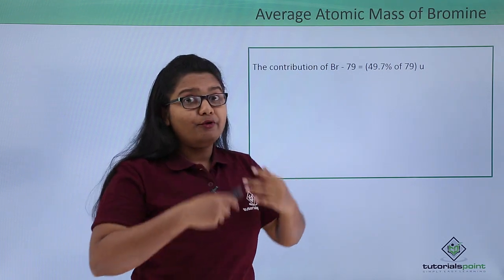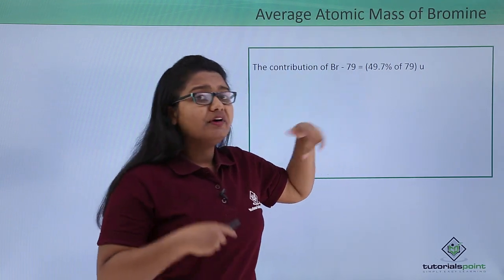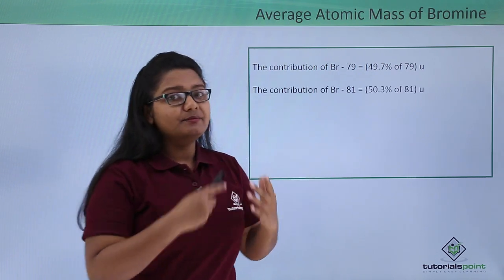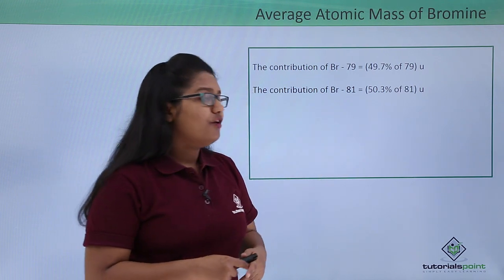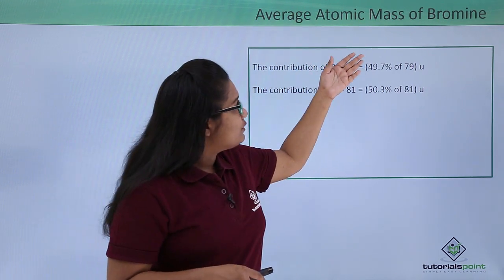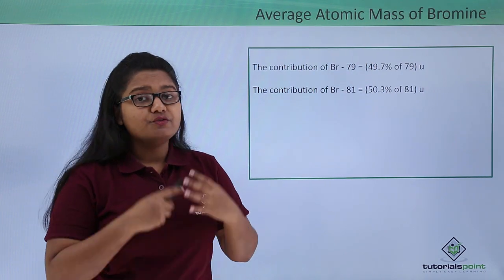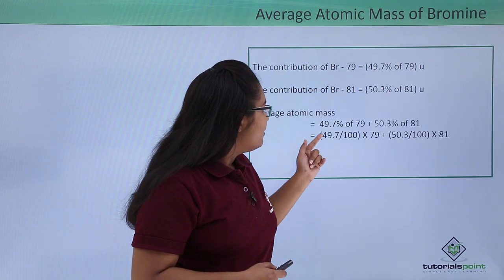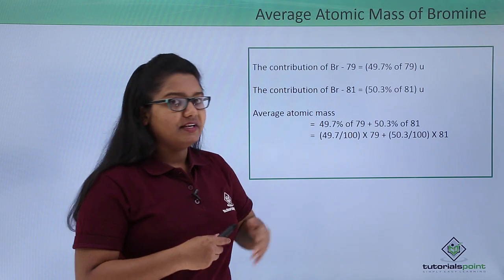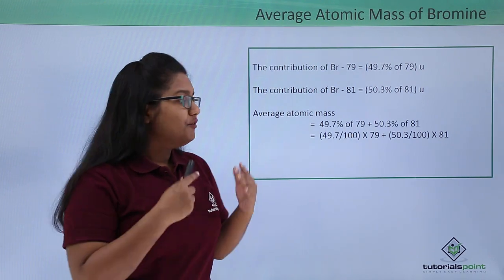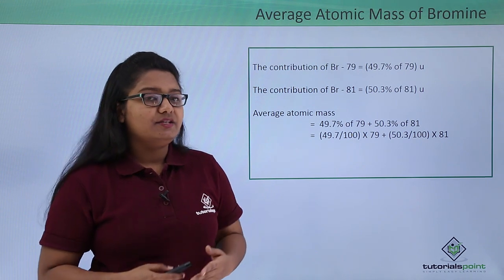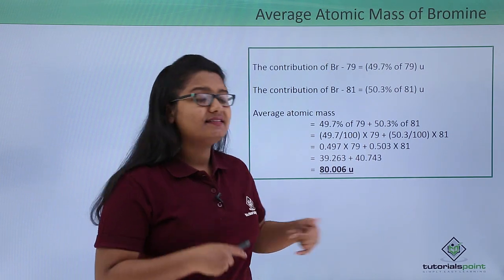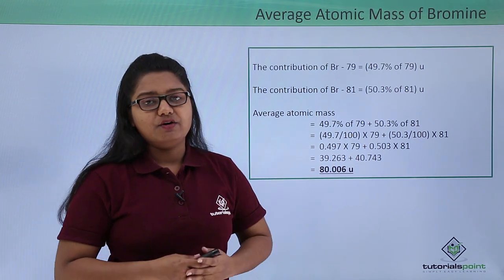The contribution of bromine-79 is 49.7 percent of 79 and the contribution of bromine-81 is 50.3 percent of 81. Now we simply need to find the values and add them up to find the average atomic mass of bromine. That is 49.7/100 multiplied by 79 plus 50.3/100 multiplied by 81, which ultimately yields an answer of 80.006 u, which is the average atomic mass of bromine.